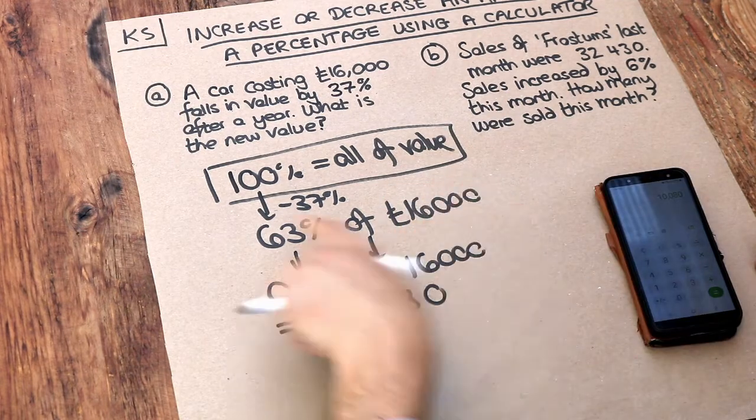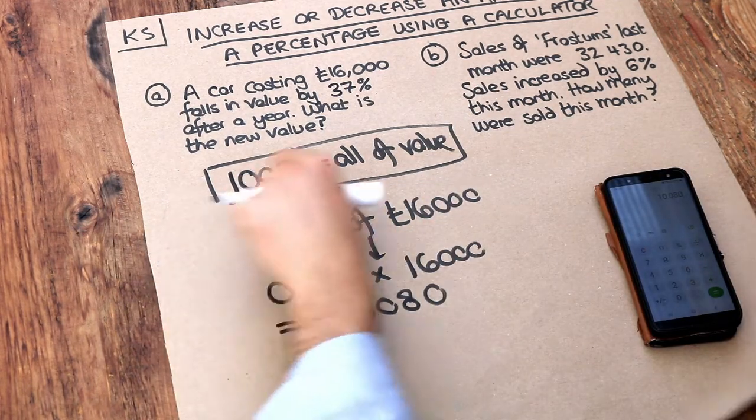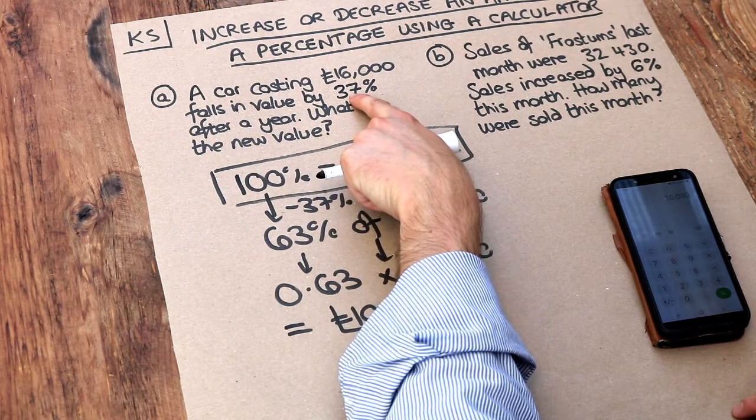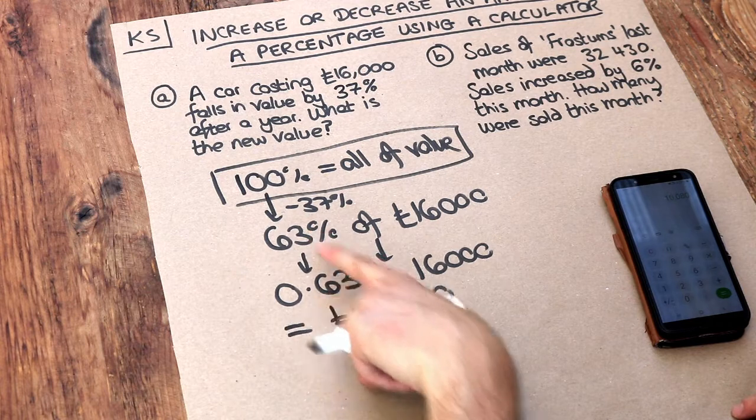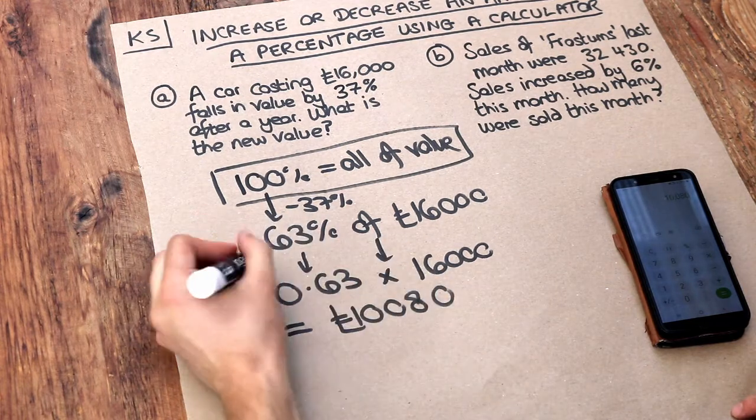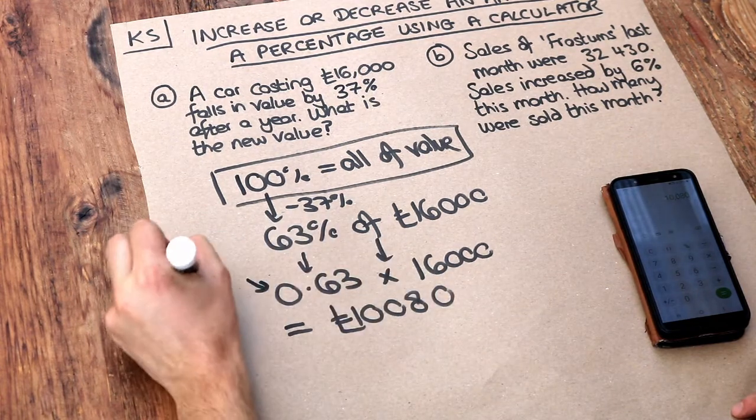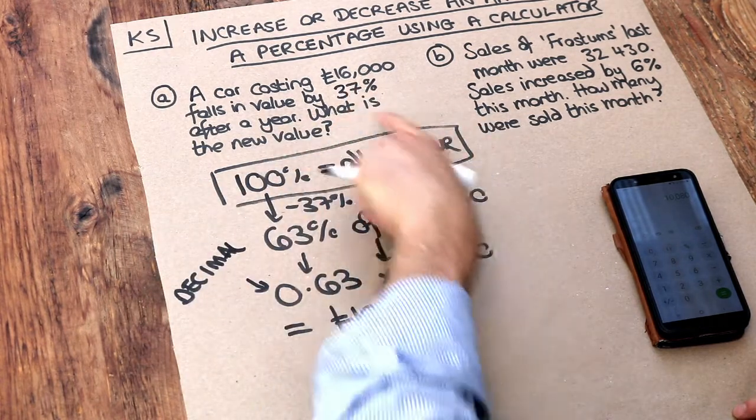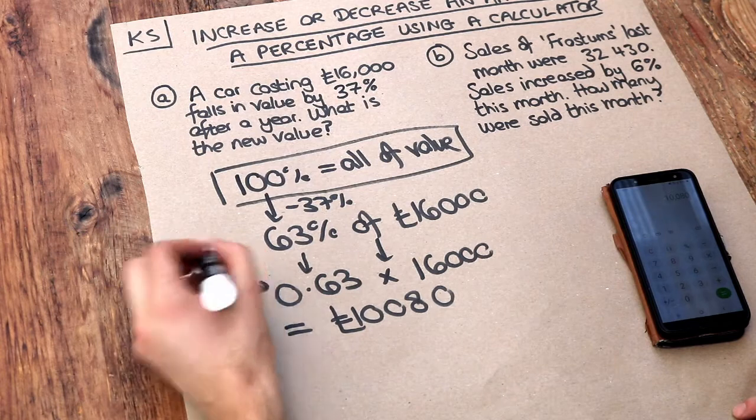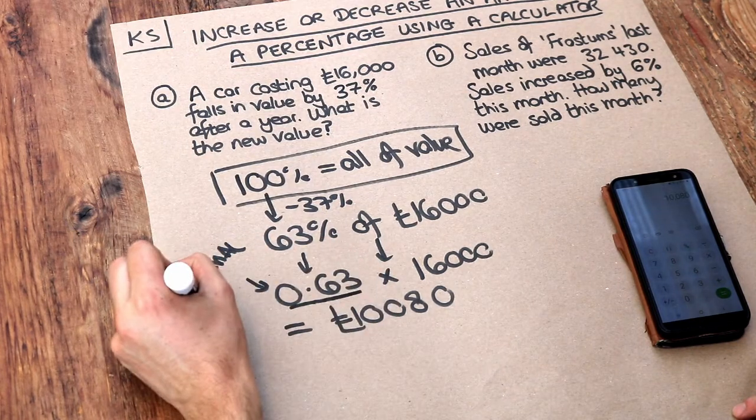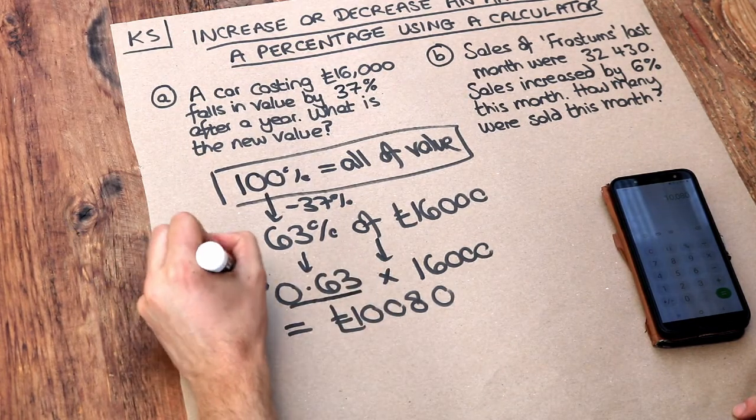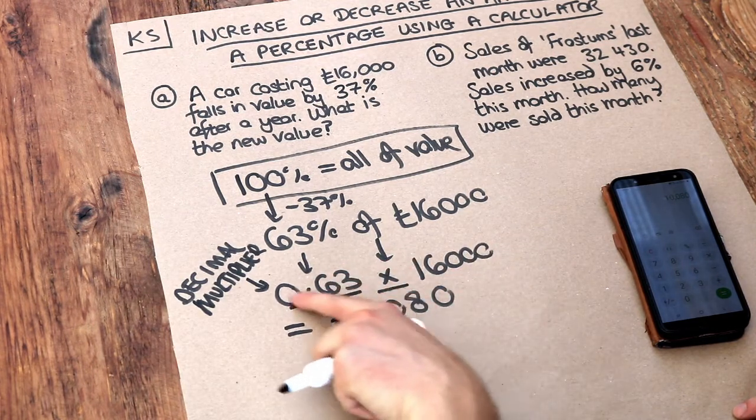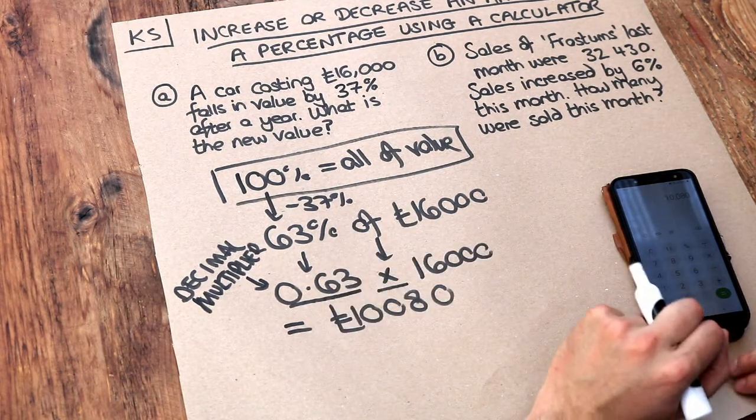So the key points there: start at 100%, change it by that percentage, in this case we want to drop it by 37% so it ends up at 63%, and then convert that percentage to a decimal. This is known by the way as a decimal multiplier because you're turning that percentage change into a decimal as we did here. And it's called a multiplier because we're multiplying our amount by that decimal in order to find out what the value is after that percentage change.